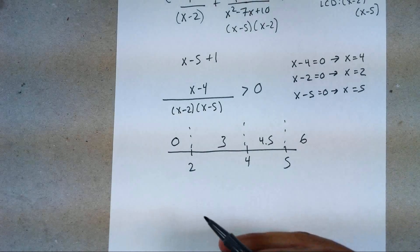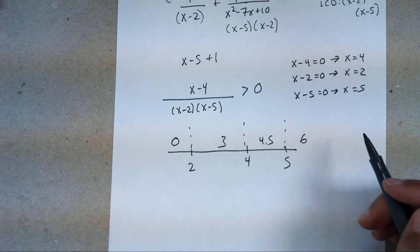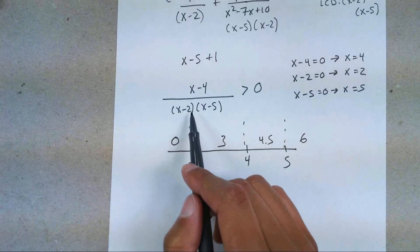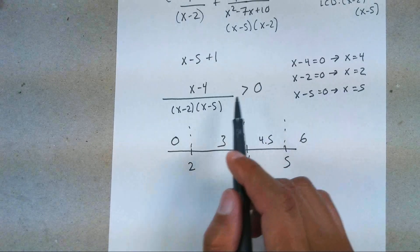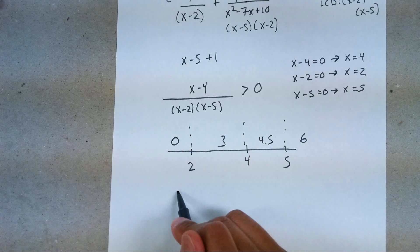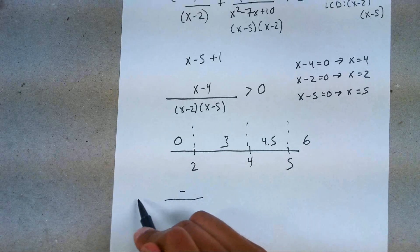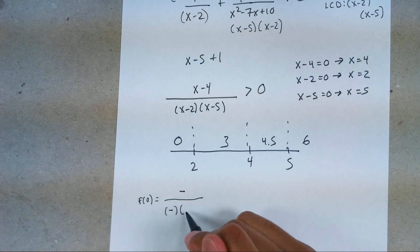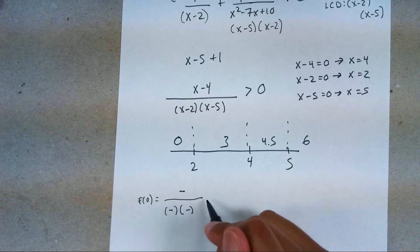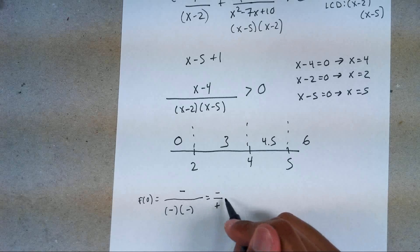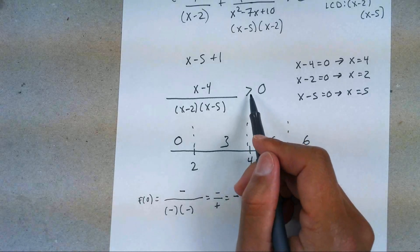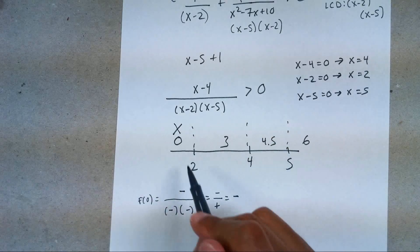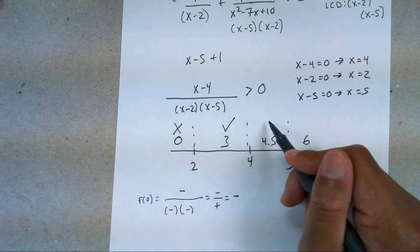Plug these points into the factored form and just care about the sign. For f(0): (0 − 4) is negative, over (0 − 2)(0 − 5) = negative times negative = positive, so negative over positive = negative. That's not what we're looking for — we want greater than zero — so this gets an x. Doing the same for the rest: check, x, check.